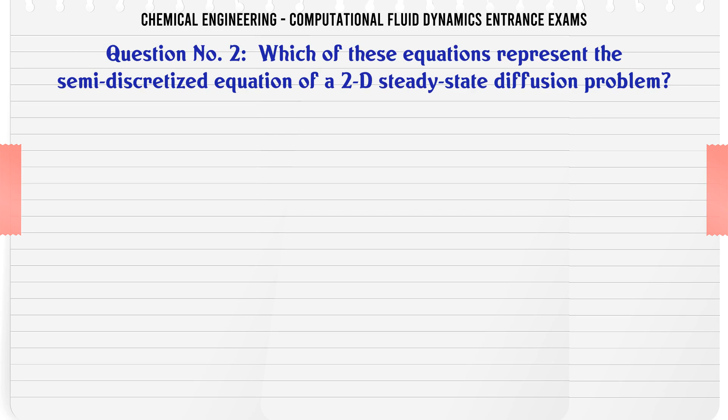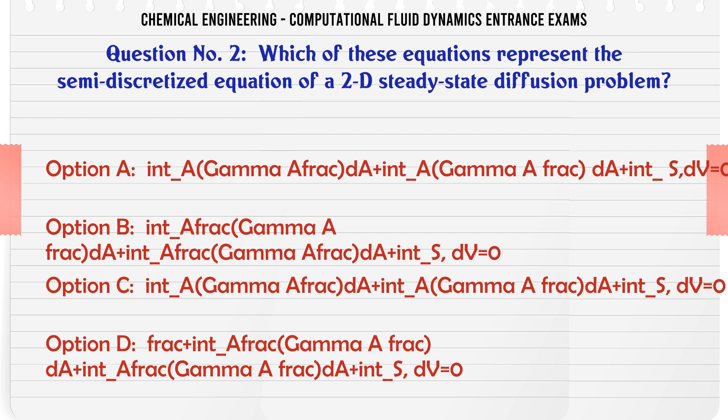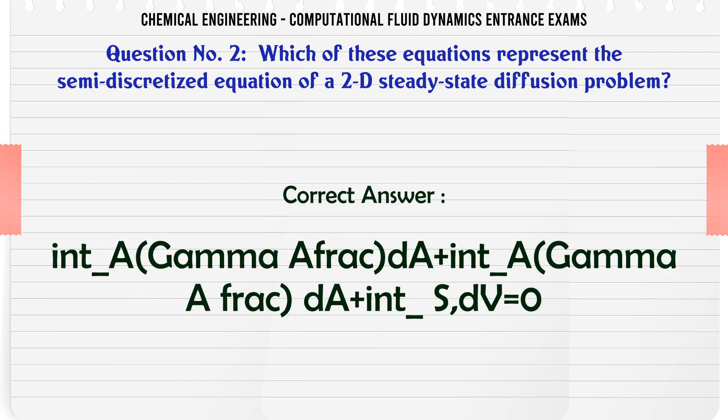Which of these equations represents the semi-discretized equation of a 2D steady-state diffusion problem? A. Integral over A of (gamma * partial phi / partial X) dA + Integral over A of (gamma * partial phi / partial Y) dA + Integral over delta_V of S dV = 0. B. Integral over A of (partial/partial X)(GAMMA * partial phi/partial X) dA + Integral over A of (partial/partial Y)(GAMMA * partial phi/partial Y) dA + Integral of S dV = 0. C. Integral of (gamma * V_DX) dA + Integral of (gamma * V_DY) dA + Integral of S dV = 0. The correct answer is A: the integral form with gamma * partial phi/partial X and partial phi/partial Y terms equal to zero.